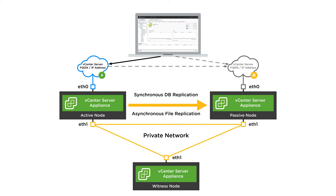such as configuration files as well as certificates. These files are generally small in nature, and so even though the replication is asynchronous, the replication between the active and passive node usually completes within just a few seconds. We also have the network that this replication occurs over — this is the private network, or in other words, the vCenter HA network. It consists of an extra Ethernet adapter that we add to the nodes to facilitate this communication.